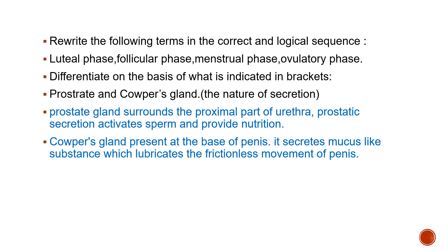Rewrite the following terms in the correct order — we have discussed the correct sequence of phases of the menstrual cycle. In correct order: first is the menstrual phase, second is the follicular phase, third is the ovulatory phase, and fourth is the luteal phase.